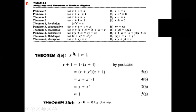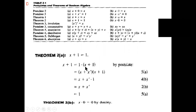Instead of this Boolean theorem, we can prove it in a table also — we will see that later. I am putting the value 1 — that is x plus 1, x plus 1. I am simplifying this using postulate φa.